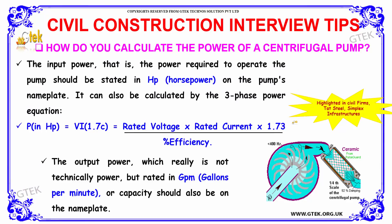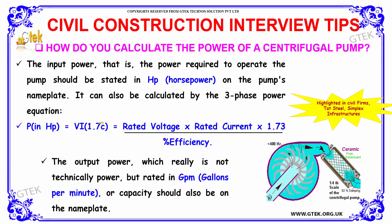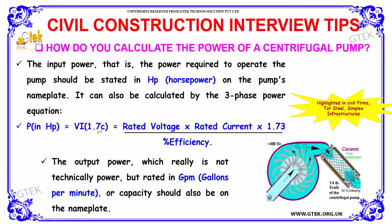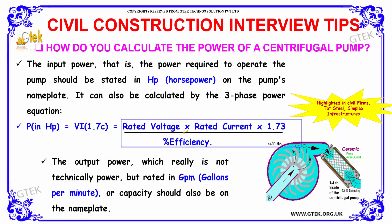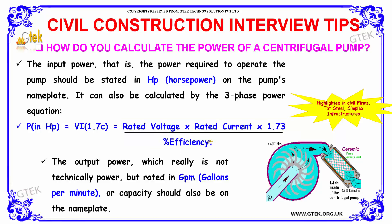How do you calculate the power of a centrifugal pump? The input power required to operate a pump is stated in HP (horsepower) on the pump's nameplate. It can also be calculated using the three-phase power equation: rated voltage multiplied by rated current multiplied by 1.73, divided by the percentage efficiency, gives the three-phase power required to operate the pump.